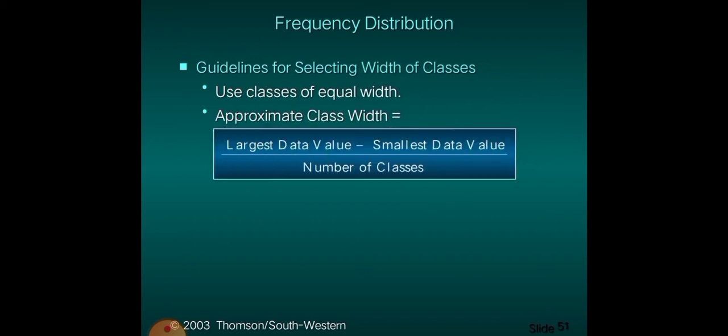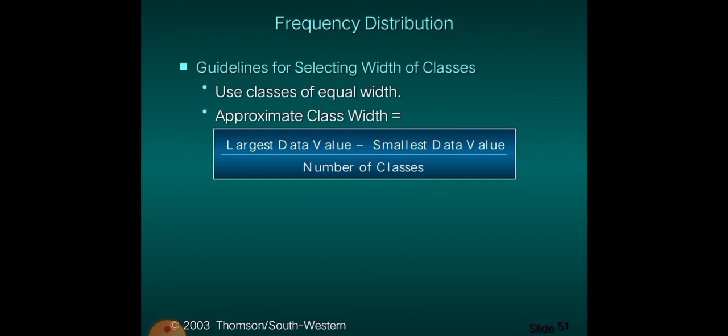The guideline for selecting the width of classes is: largest data value minus smallest data value, divided by the number of classes.